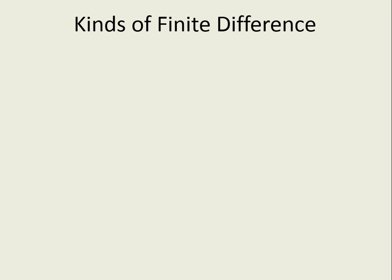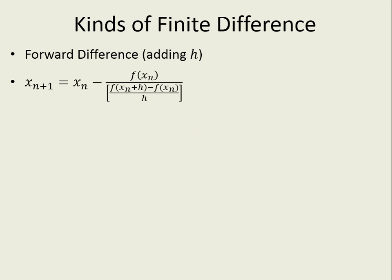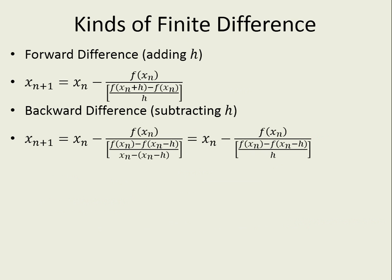Now let's look at some of the different kinds of finite difference. There is the forward finite difference, where we added h, which is the equation we came up with. There's also the backward finite difference, where we subtract h. And using the same math as earlier, we'll come up with this equation.